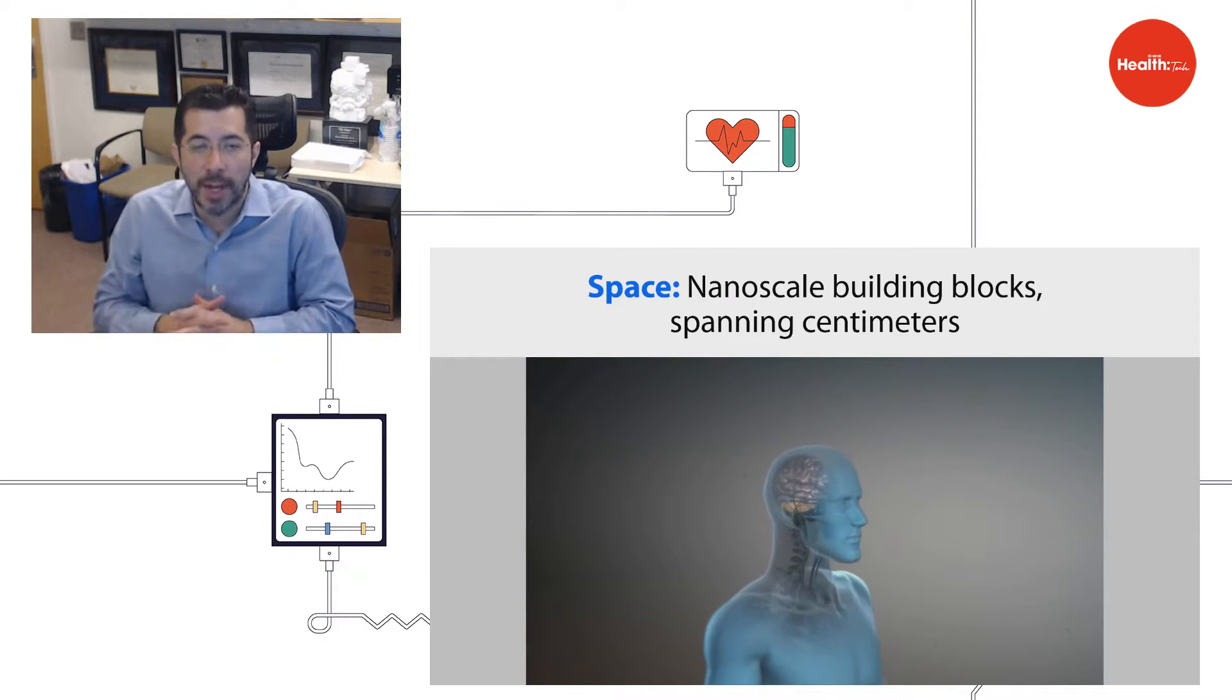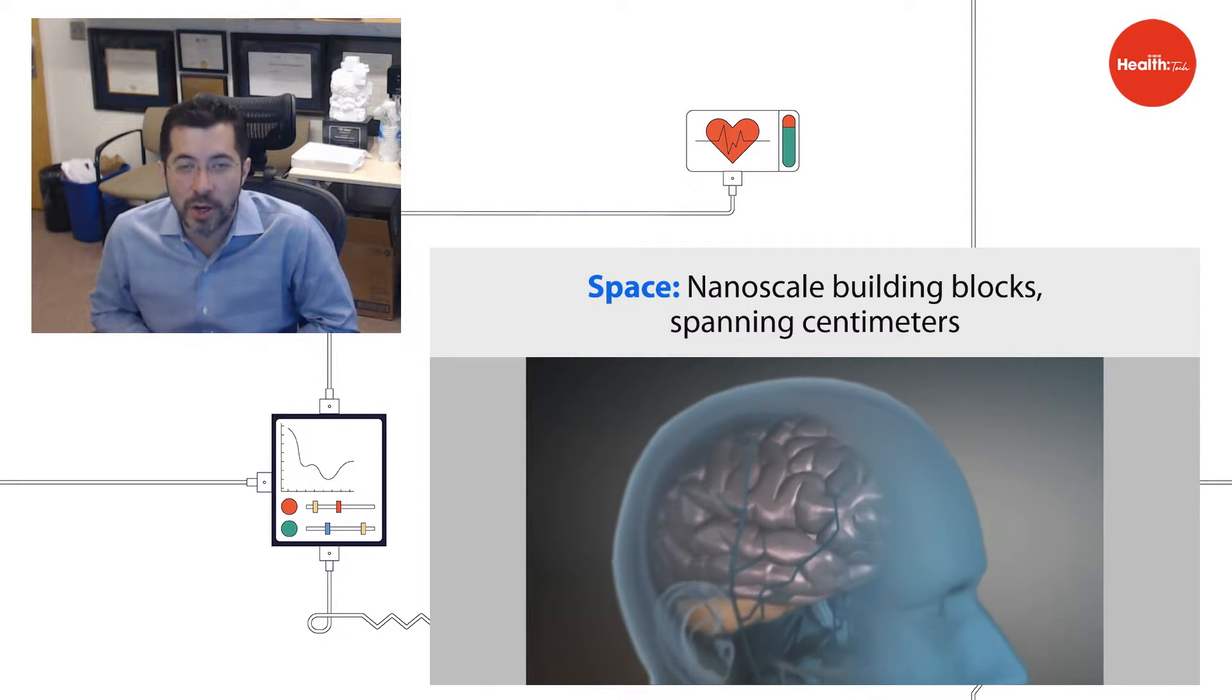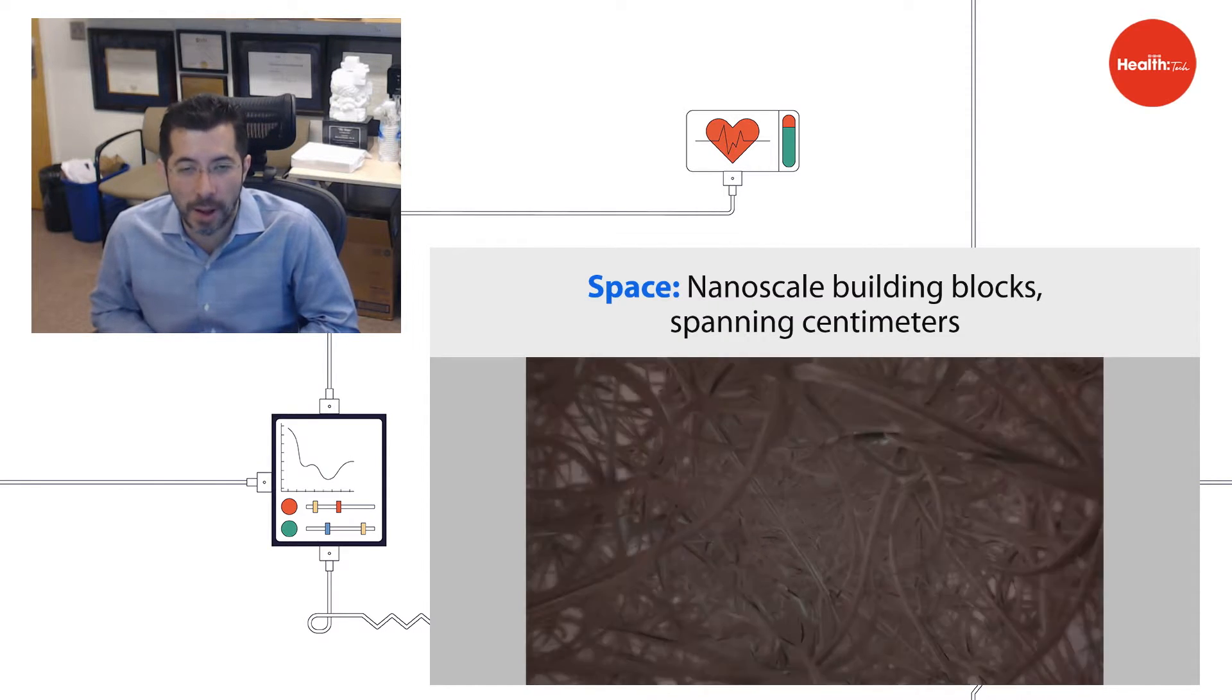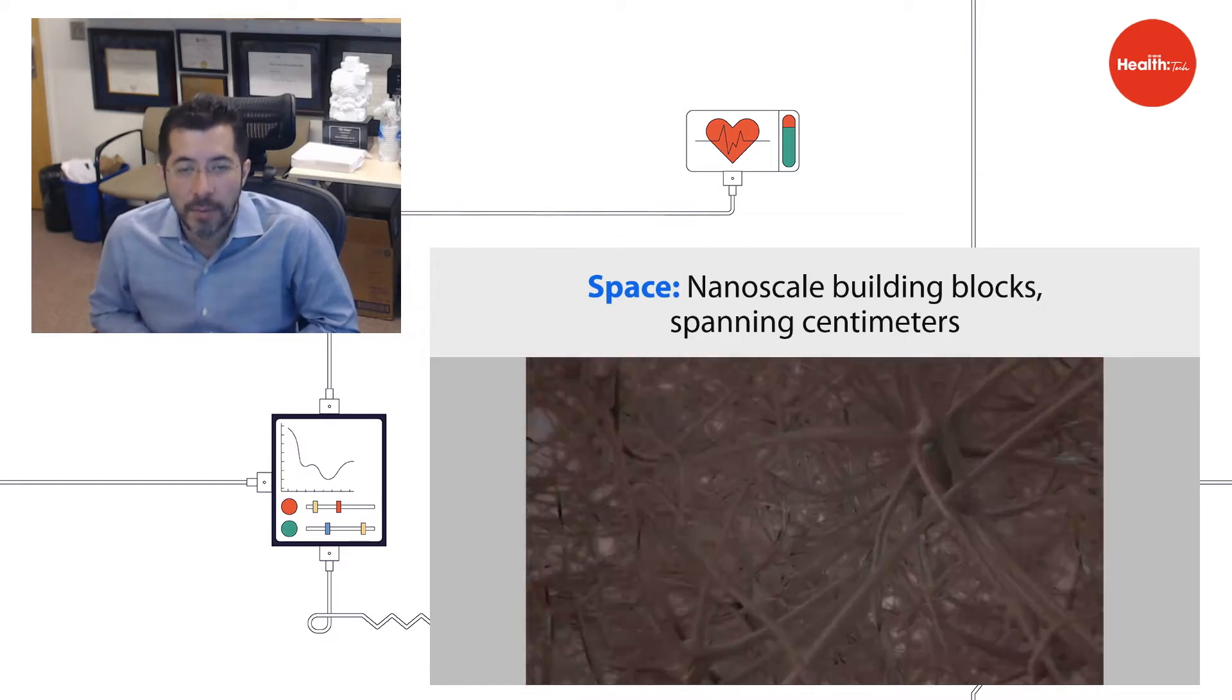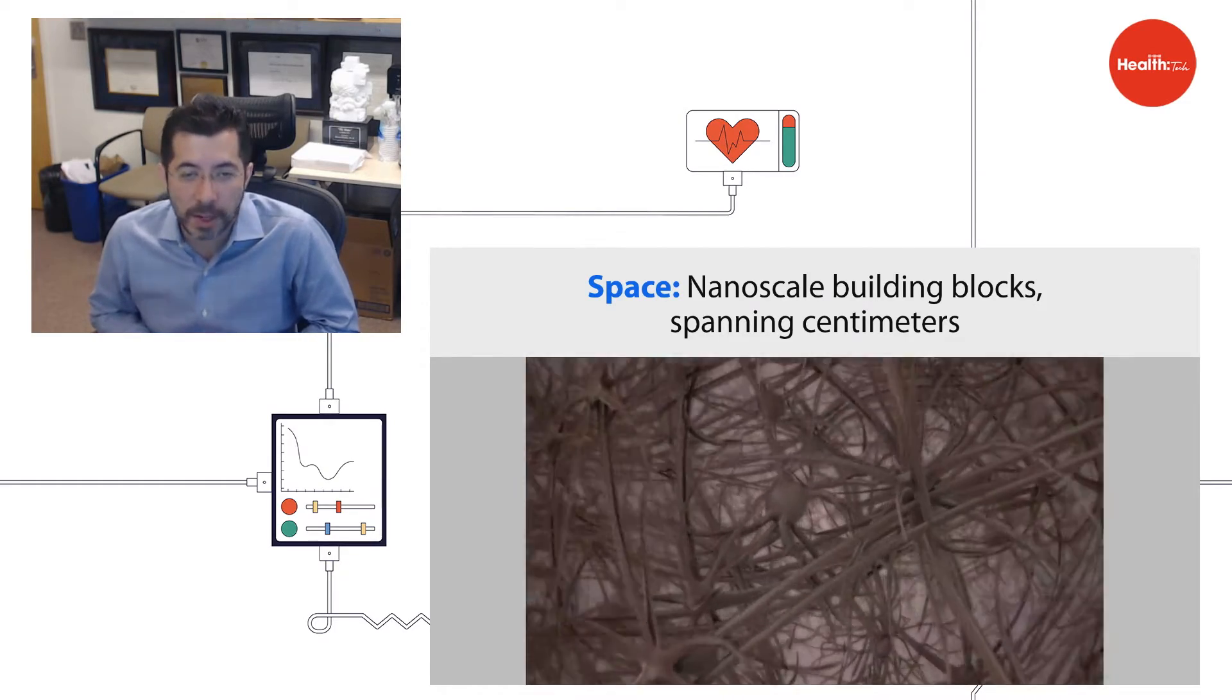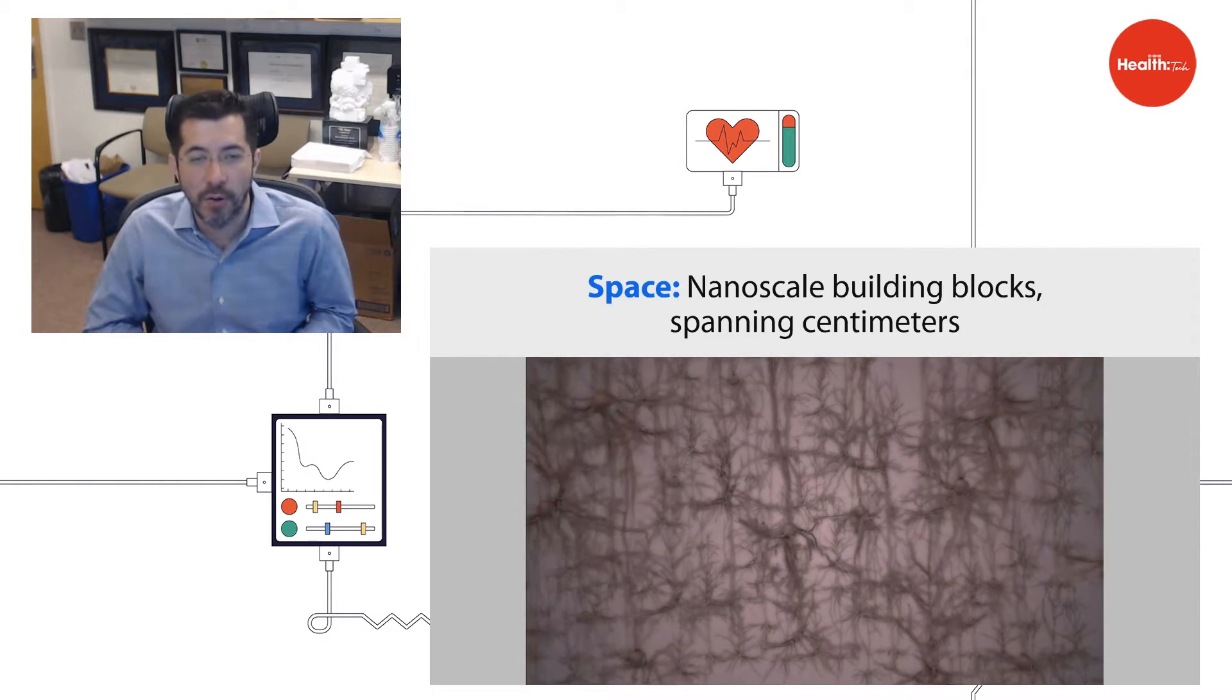Well, the brain is uniquely complicated in space and in time. Along the spatial dimension, brain cells are enormous objects. They are centimeters in spatial extent. But the wiring of the brain, the connections between brain cells, which have very elaborate geometry, are extraordinarily complicated.